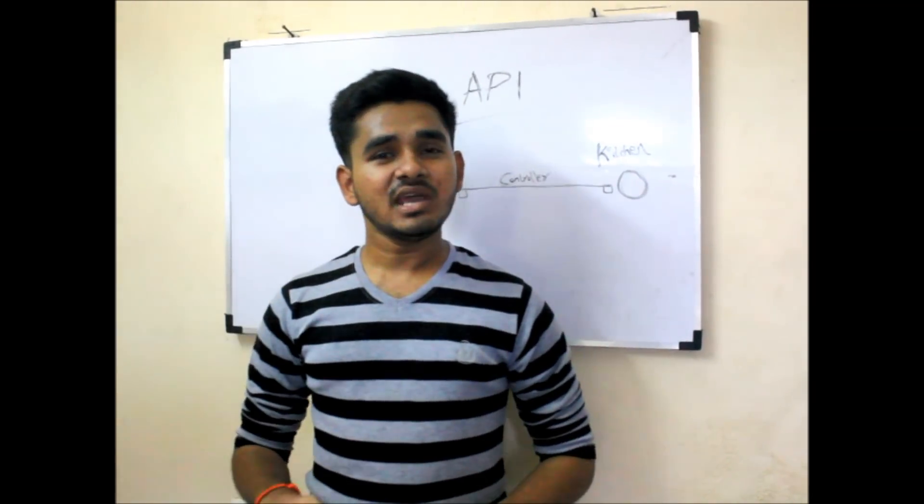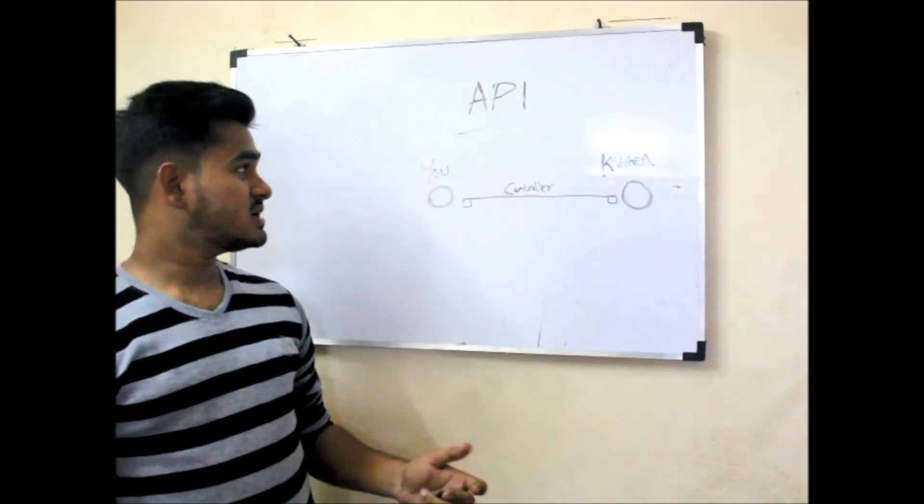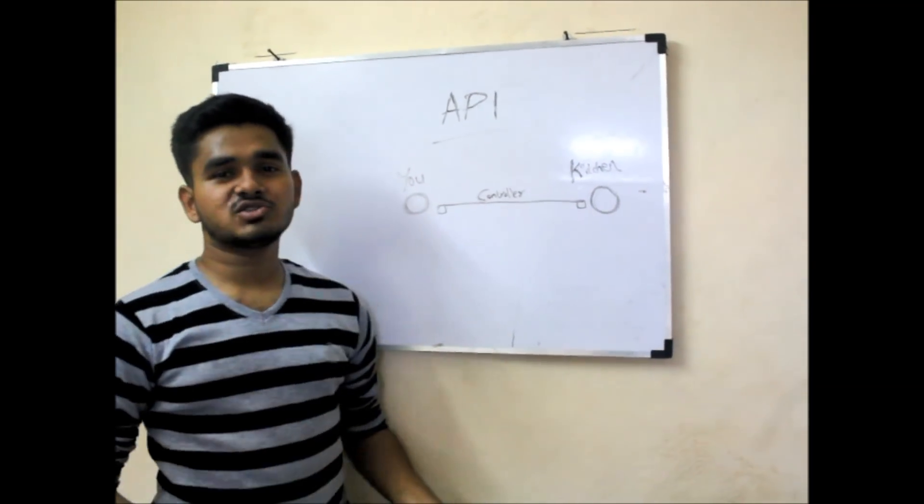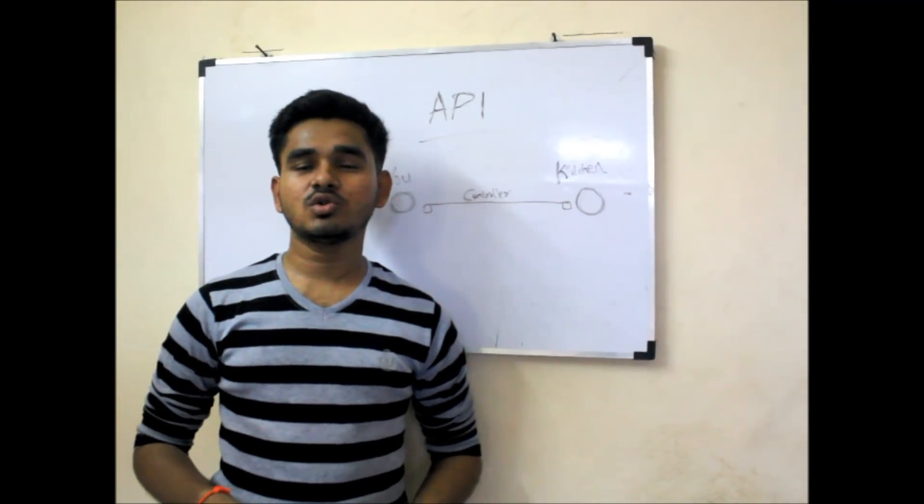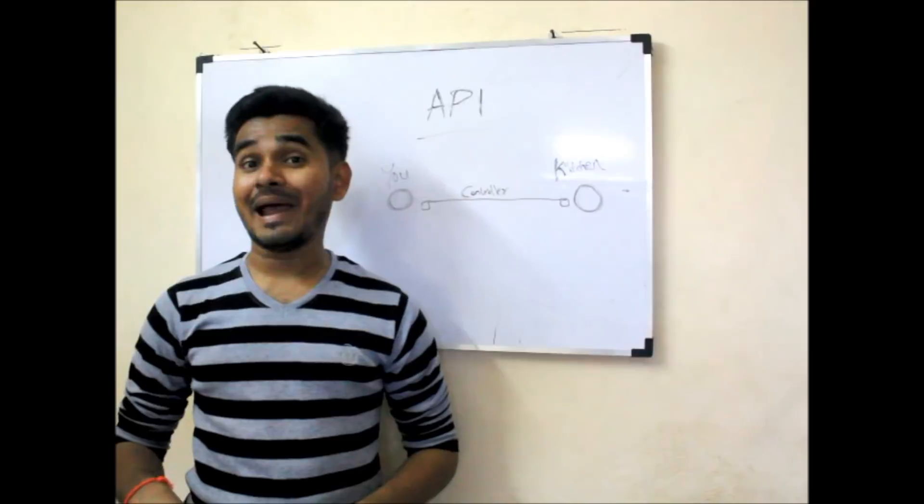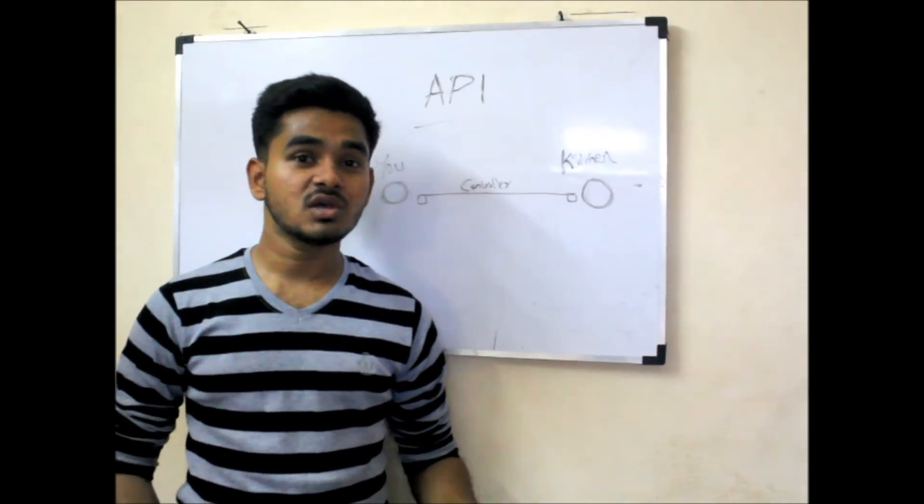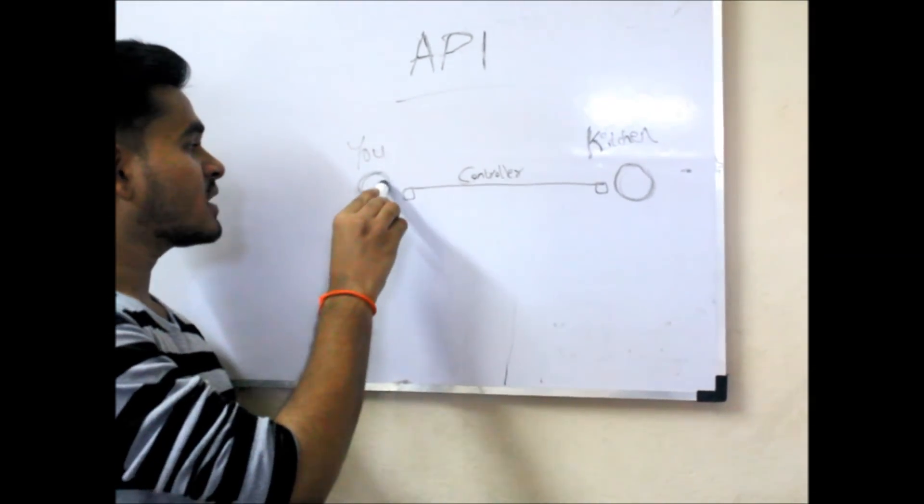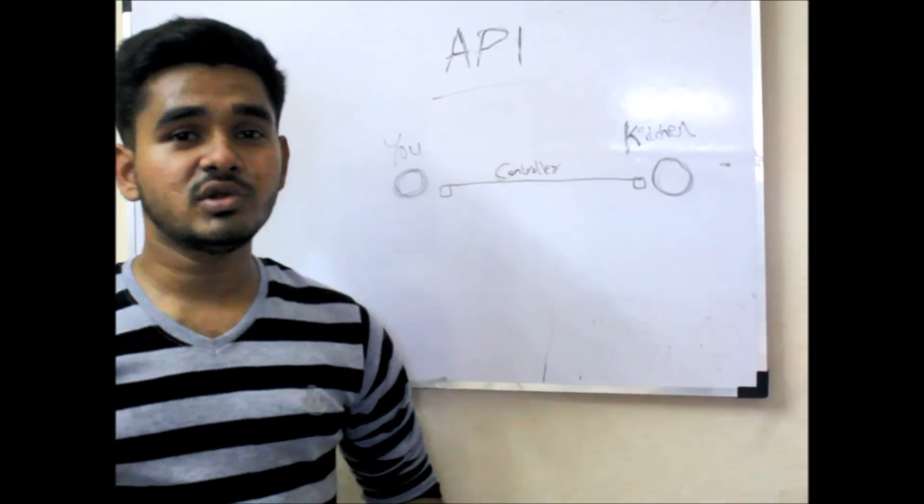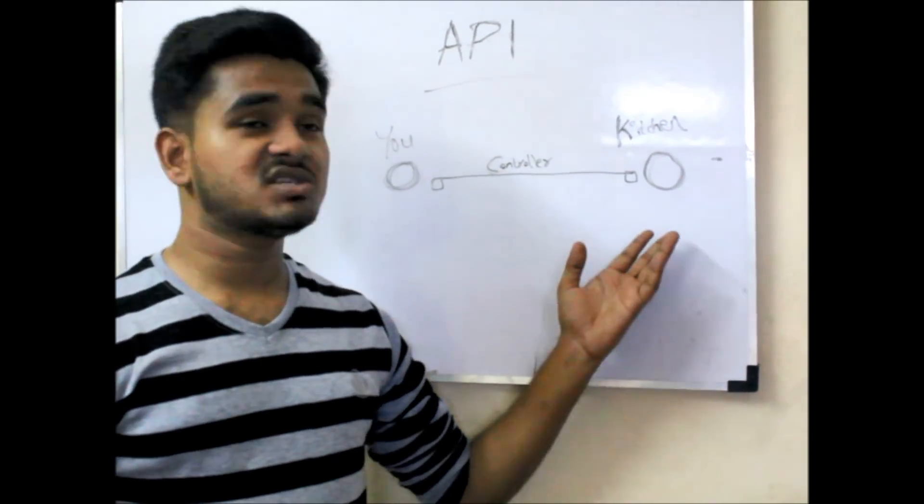Let me take a simple example. Remember that example. You went to a restaurant. This example is similar to the model view controller example I explained earlier in my previous videos. You went to the restaurant and you need to have some food item which is in the kitchen.